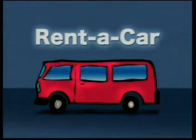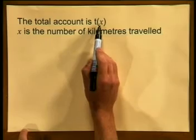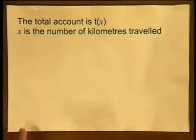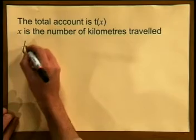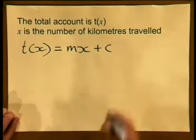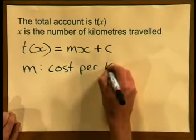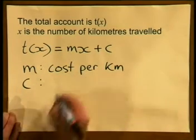If you rent a vehicle the rental company might charge an amount per kilometer traveled plus a constant rental fee. The number of kilometers traveled is multiplied by the cost per kilometer and then the rental fee is added to give us the grand total. Now let's see if we can write this down as a formula. We know that the total cost is going to be given by t(x) and that x is the number of kilometers traveled. So therefore t(x) the total amount is equal to m multiplied by x plus c where m is the cost per kilometer and c is the rental fee.